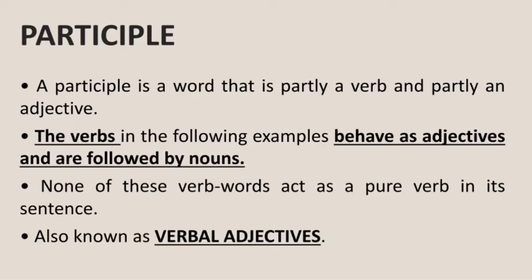Underline the sentence: 'The verbs all behave as adjectives and are followed by nouns, so these words are called verbal adjectives or participles.' These lines are given on page 161 below the example portions. So we have come to know that a participle is partly a verb and partly an adjective, each participle is followed by a noun, and participles are also known as verbal adjectives.